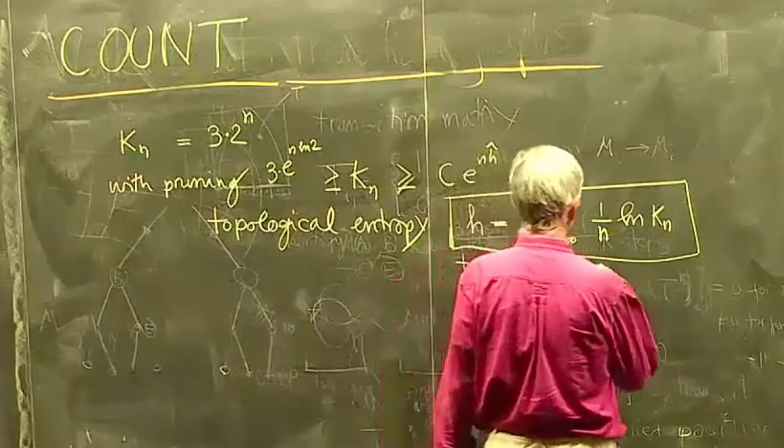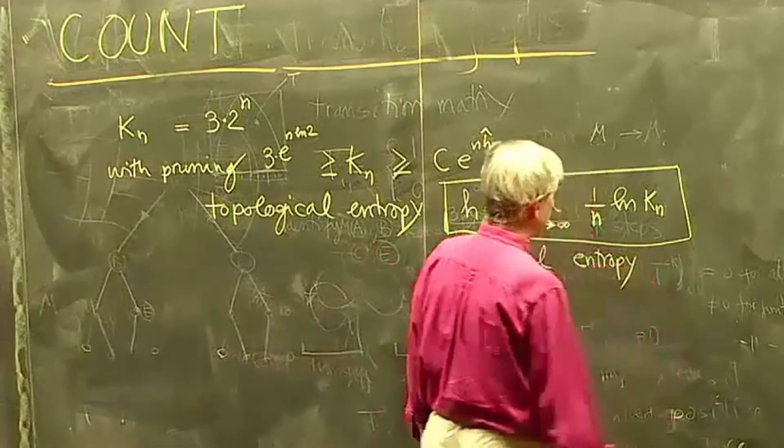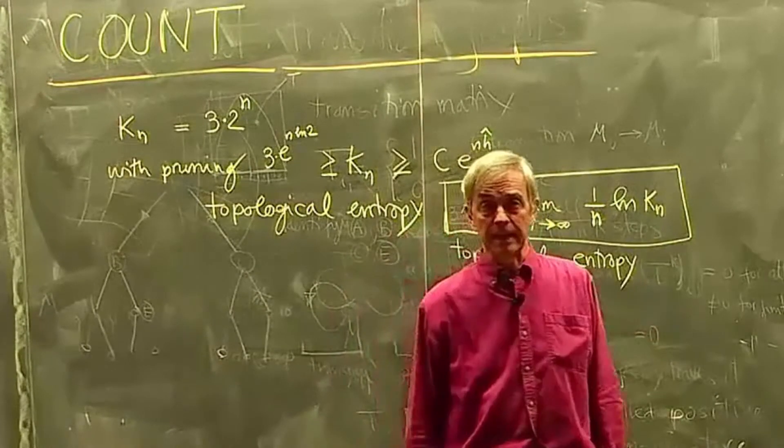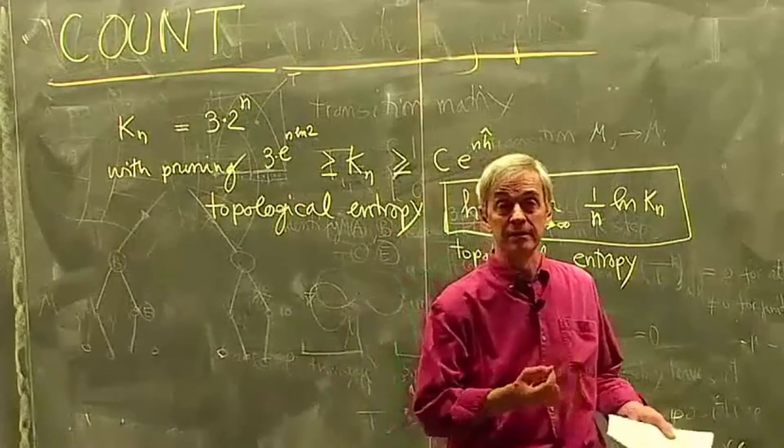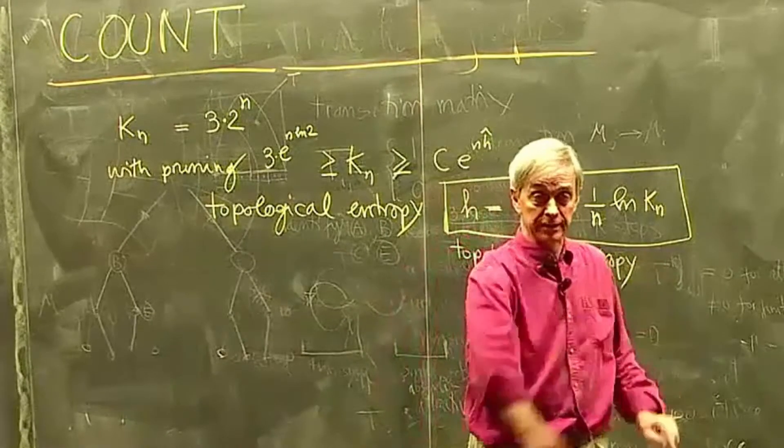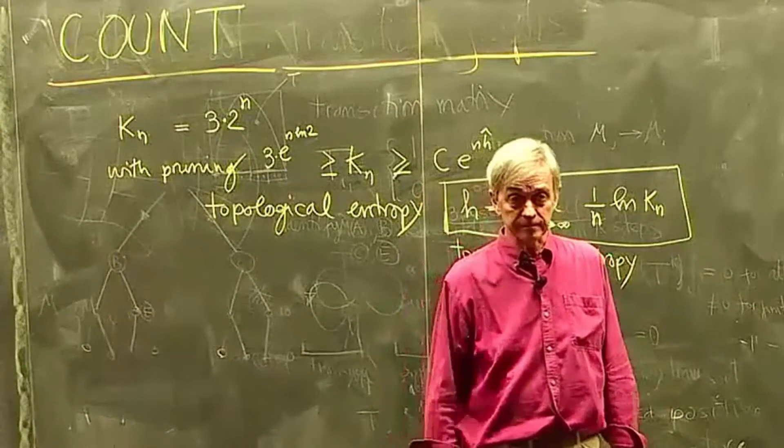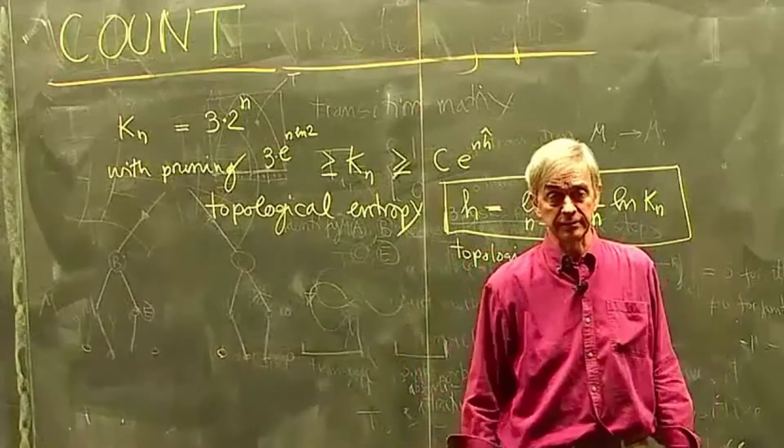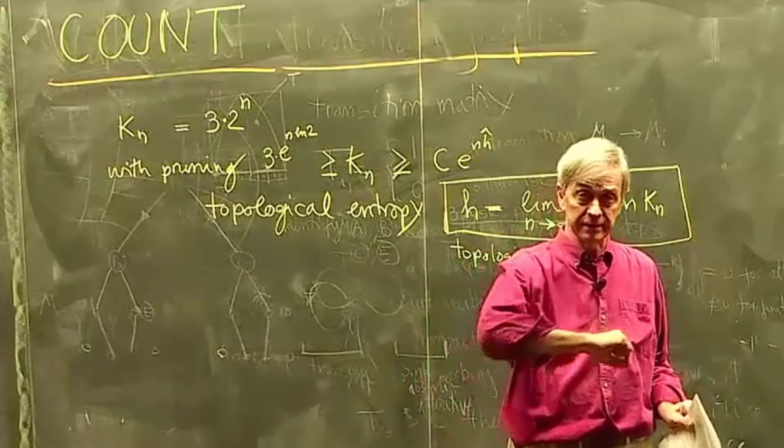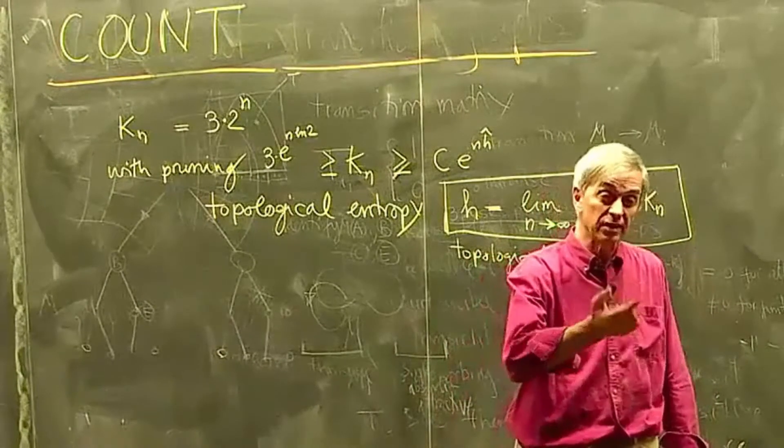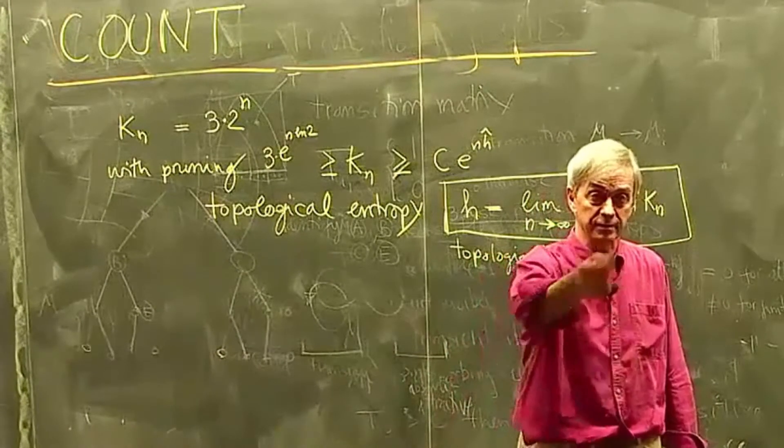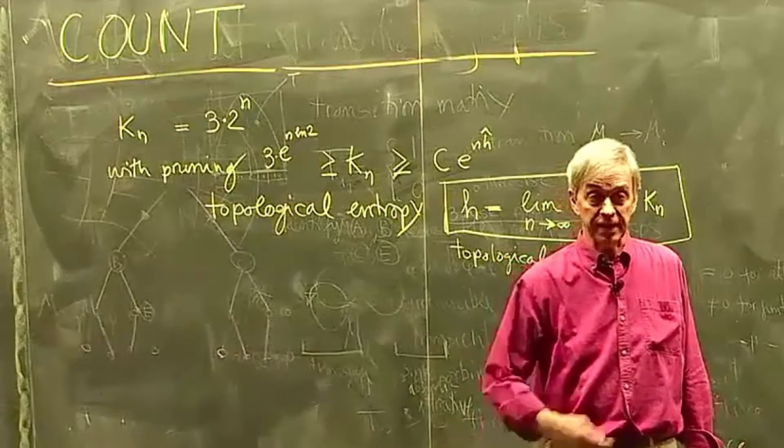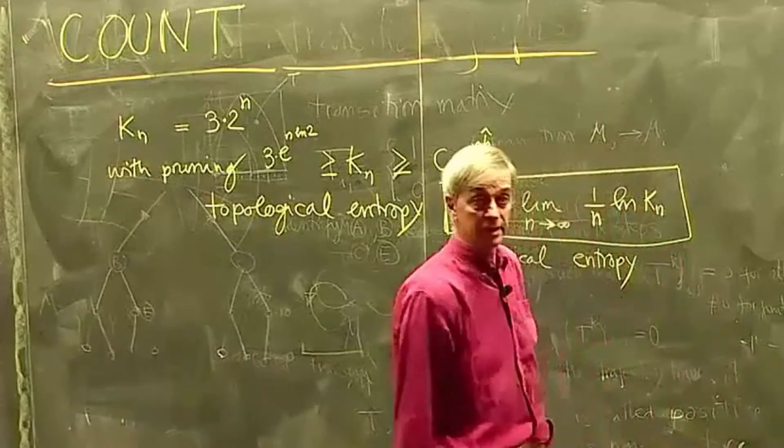And it's called entropy because if you think of every sequence as a particular walk, particular trajectory. But you can think the space of all possible ways of getting from there is divided in these sequences. And you think of each one of them as a state. One possible way to get from here to there is one possible state. Then it looks very much like entropy in statistical mechanics.